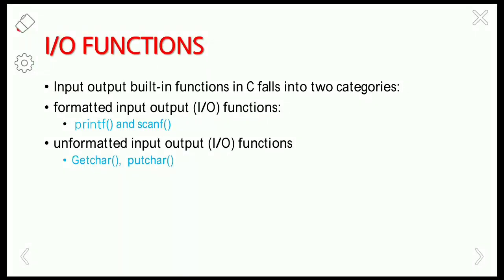Hello everyone, welcome to my channel. In this video we are going to learn about the input/output functions in the C programming language. Before going into the input/output functions, let us know about the input/output devices. In a computer, the keyboard, mouse, and scanner are some of the input devices. Through the input device, a user can give input to the computer. Some output devices are a monitor, printer, and speakers. The user can get the processed information from the computer using the output devices.